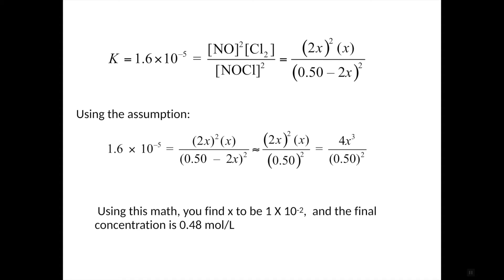So plugging everything in, that's our K. Here's our kind of scary looking math equation of 2X, 4X squared times X divided by 0.5 minus 2X squared. But when you use the assumption, you can get rid of the 2X, because it's still very small, and you have much more beautiful math to work with to calculate your value of X.